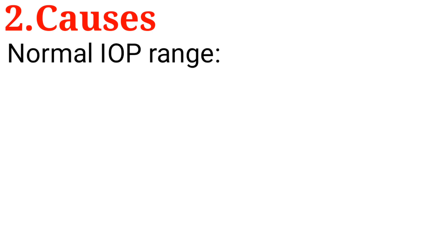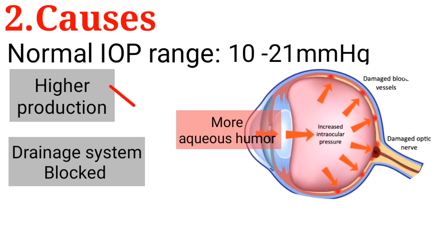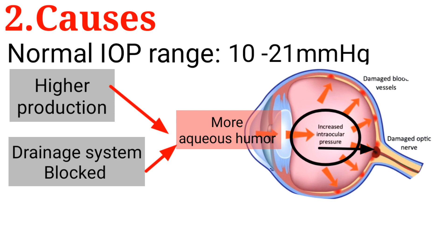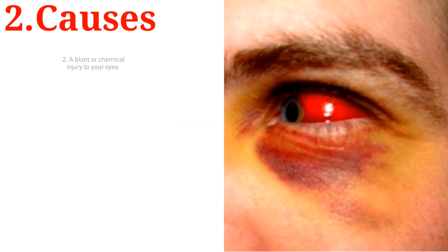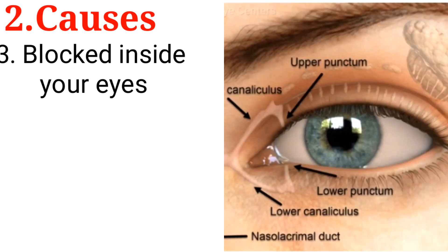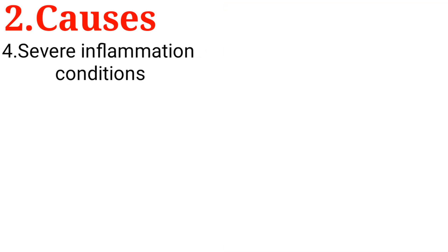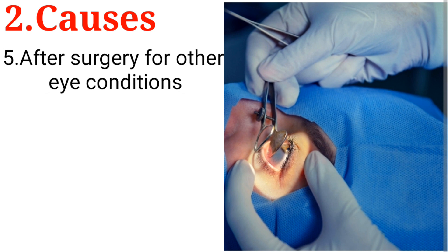The normal IOP ranges from 10 to 21 mmHg. If the amount of aqueous humor produced is higher or the drainage system gets blocked, more aqueous humor accumulates in the eye, resulting in a rise in intraocular pressure and damage to the optic nerve. Other causes can include a blunt or chemical injury to your eyes, severe eye infections, severe inflammatory conditions, and rarely after surgery for other eye conditions.